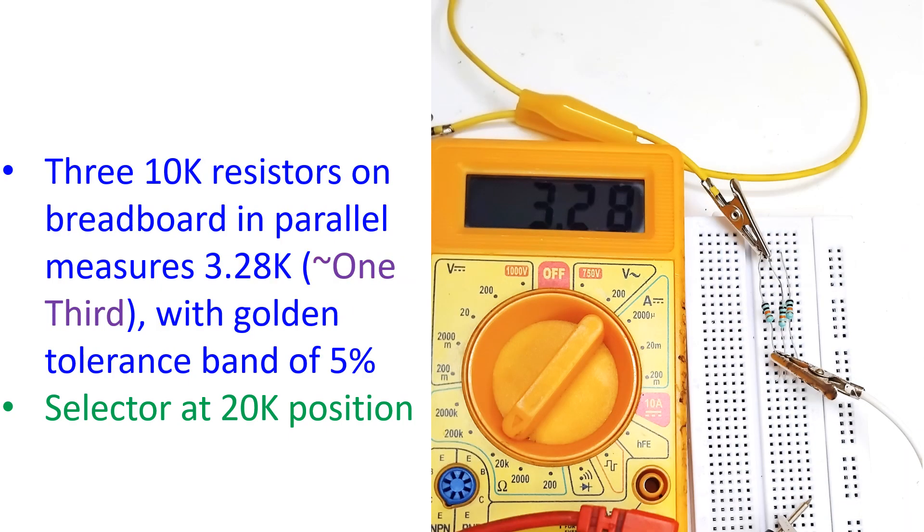Three 10k resistors in parallel on breadboard measures 3.2k, approximately one third, with golden tolerance band of 5 percent. Selector at 20k position.